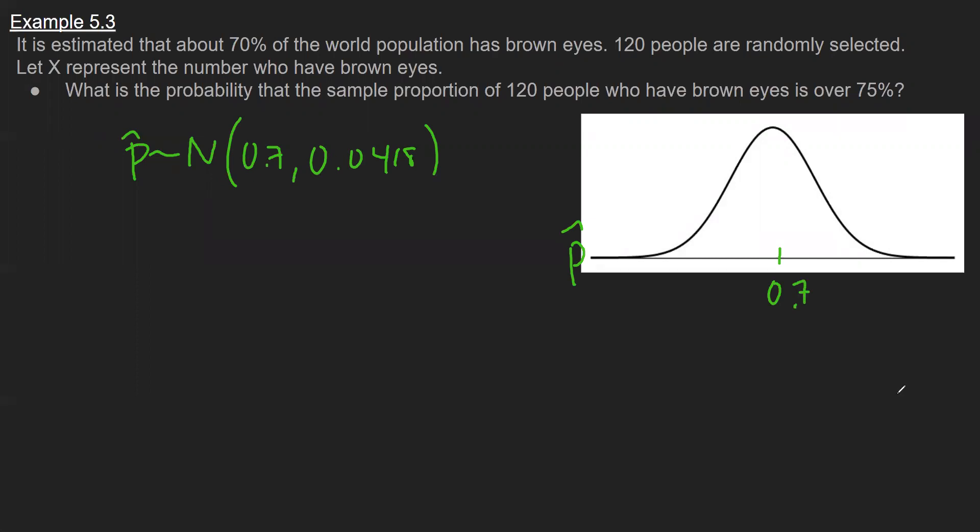What I'm trying to do is the following. The question asks, what's the probability that the sample proportion who have brown eyes is over 75%? In other words, probability that my random variable p hat exceeds 0.75. Just like all of the other units in PSTAT 5A, if you know the distribution of your random variable, then you have a way to find its probability.